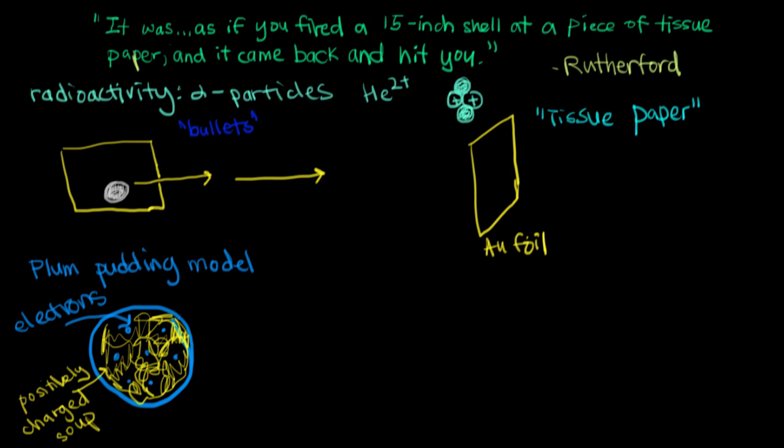Because Rutherford was starting with this in his mind for what the gold atoms look like, he could actually do mathematical predictions on what the alpha particles would do, and he predicted that they would just go straight through. You can use physics equations to look at the electric field generated by this positively charged soup. Because the charge is spread out all over the atom, the field is very weak. Occasionally one might be bent a little bit.